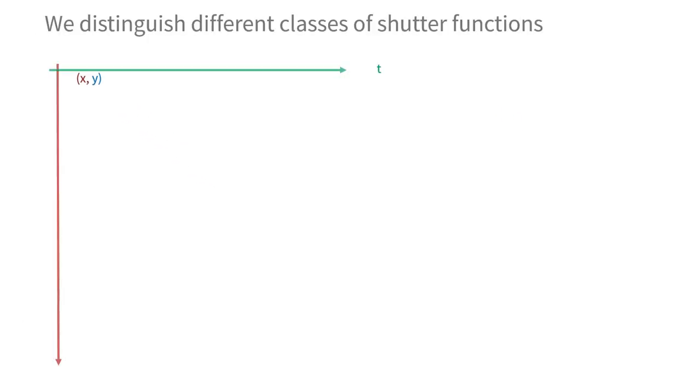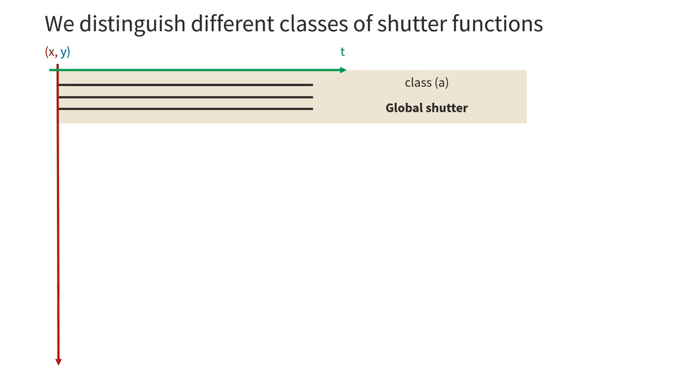We consider different classes of shutter functions that formalize the fact that those can be parametrized differently and feature different properties. The simplest is the global shutter we mentioned earlier, in which all pixels integrate at the same time for the whole duration of the exposure.